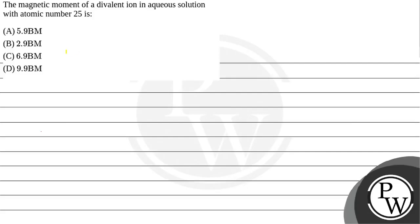Hello, let's read the question. The magnetic moment of a divalent ion in aqueous solution with atomic number 25 is: (A) 5.9 Bohr magneton, (B) 2.9 Bohr magneton, (C) 6.9 Bohr magneton, (D) 9.9 Bohr magneton. This question has given atomic number which is 25.